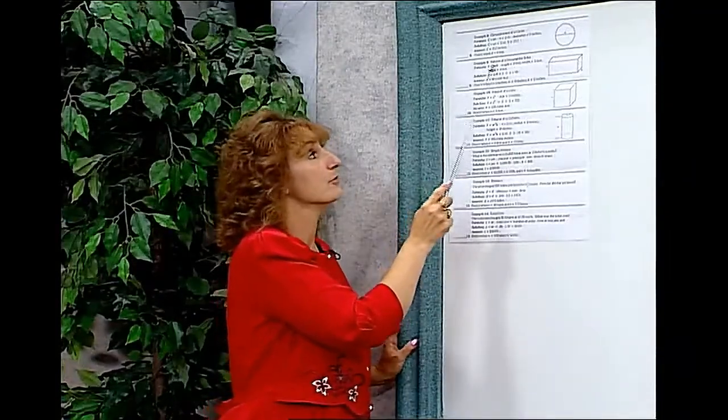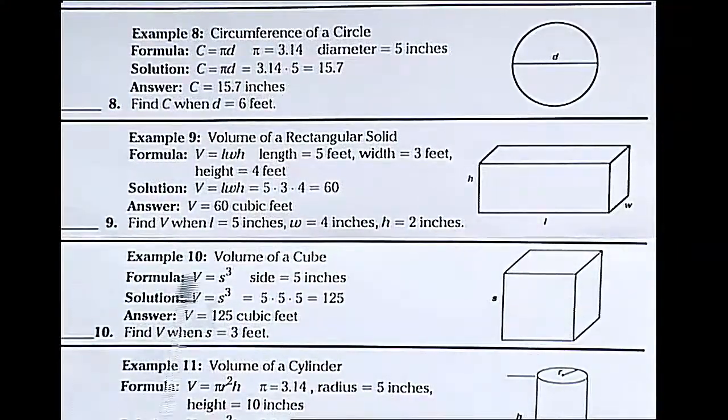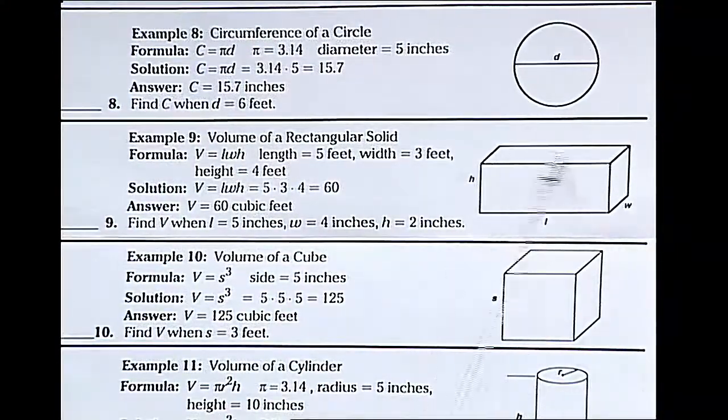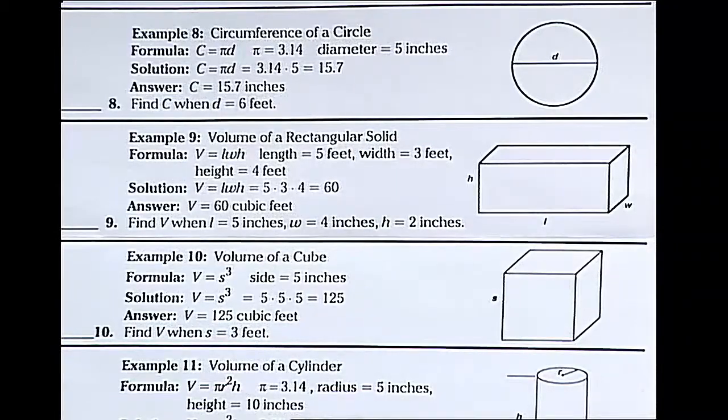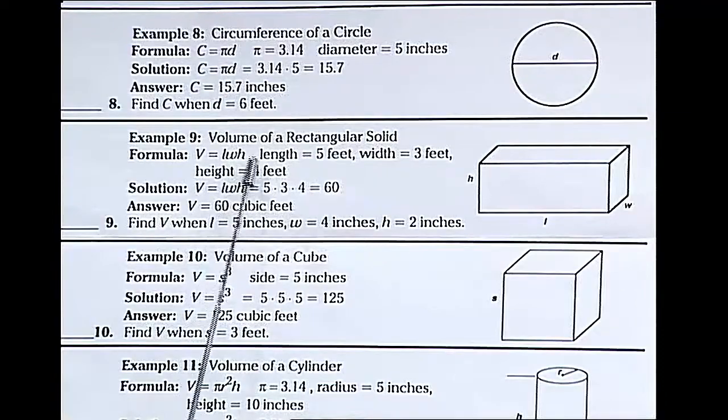The volume of a rectangular solid - it's three-dimensional, so it's solid. It has a rectangular base, so we call it a rectangular solid. The volume is length times width times height.